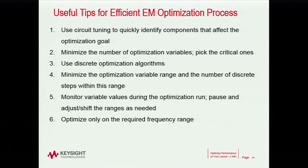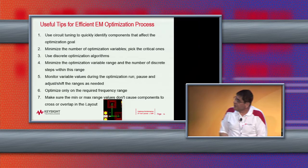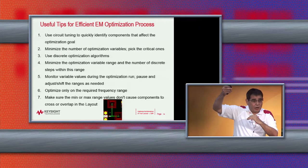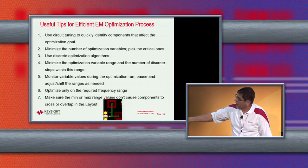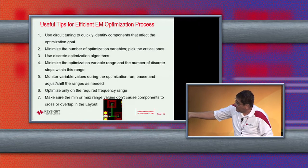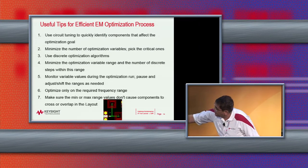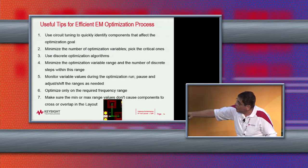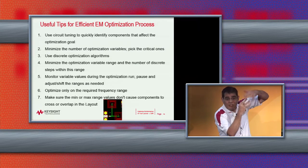Optimize only over the required frequency range — don't over-specify a very large frequency span; just your spec. That saves significant time. Also very important: when setting minimum and maximum range values for each component, make sure that at the minimum value no components will overlap. For example, if you optimize a line from 0 to 200 microns, at 0 microns one spiral might hit another spiral or a via. Overlapping components will give you bogus results, so always verify the layout geometry at the minimum range value before starting optimization.